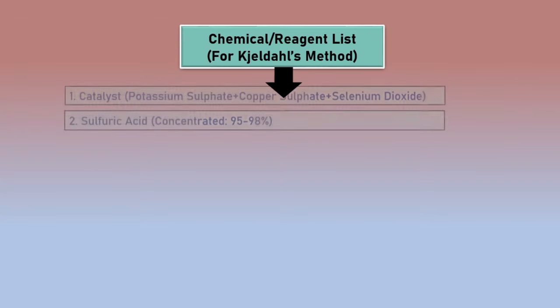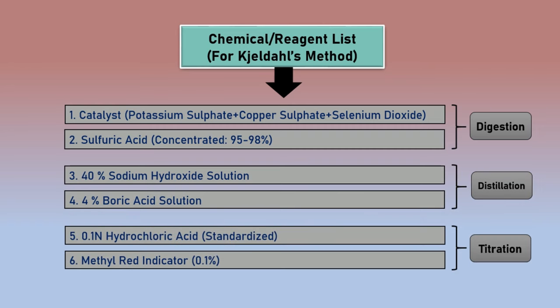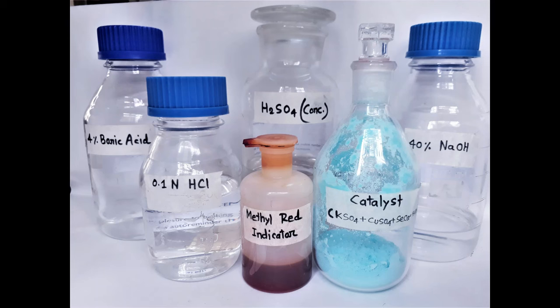To carry out the whole test we need some chemicals and reagents. For sample digestion we need concentrated sulfuric acid and catalyst. For distillation we need 4% boric acid and 40% sodium hydroxide solution. And finally for titration we need 0.1 normal hydrochloric acid and methyl red indicator solution. Chemical and reagent preparation is very crucial for any test. The detailed procedure of chemical and reagent preparation for protein analysis is given in the second part. The link is given in the description section of this video.